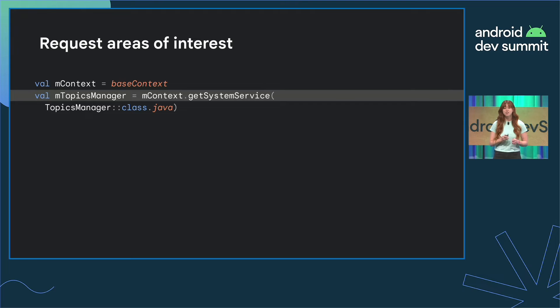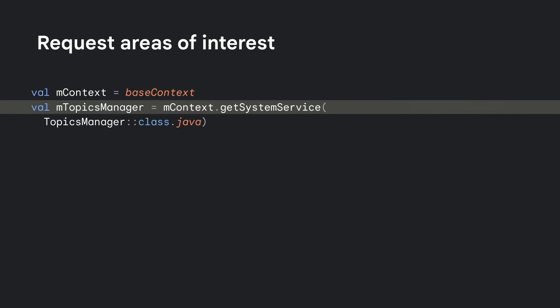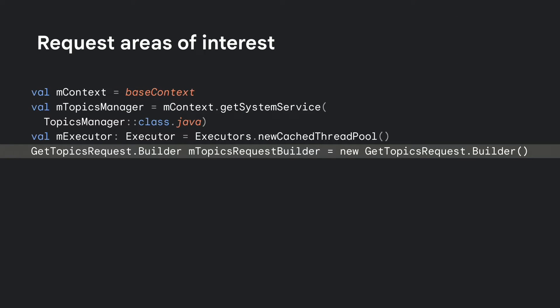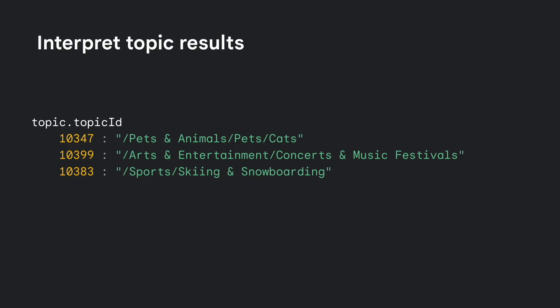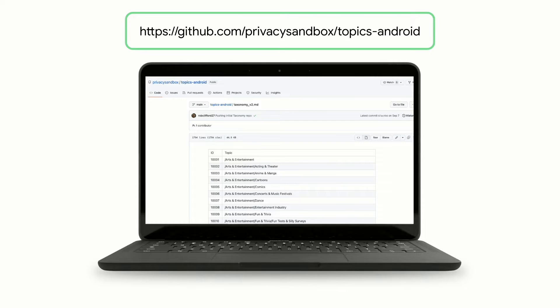To do this, first instantiate the Topics Manager, then instantiate the Topics Request Builder, which can be used as is or populated with options for the request. Then the Topics Manager can be used to call get topics and will return a callback. The Topic objects will include a Topic ID, which corresponds to a taxonomy entry. In this case, our user is interested in cats, concerts, and winter sports. You can view the full taxonomy on our Privacy Sandbox GitHub page.